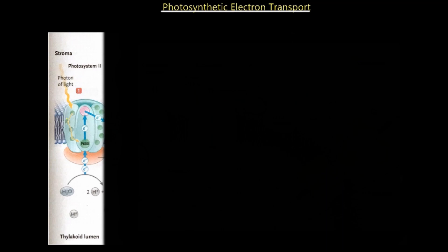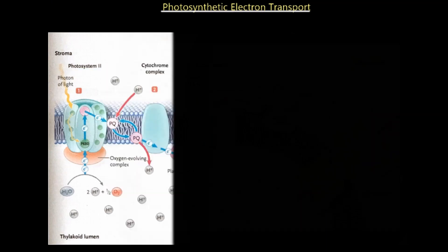In the last video we left off talking about photosystems and how a photon of light is going to be absorbed on a structure on the thylakoid membrane called a photosystem. There are several photosystems located in the thylakoid membrane that absorb photons of light, and using this energy they pass electrons down the thylakoid membrane. The whole point of electron transport is to generate NADPH as well as ATP, because these two are the substrates needed for the Calvin cycle to produce our organic compound.